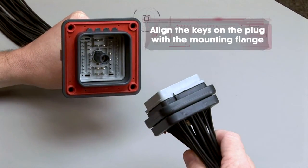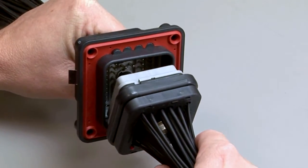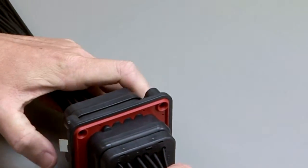Align the keys on the plug with the mounting flange assembly. Push the two parts together and tighten the jack screw to the recommended torque rating.